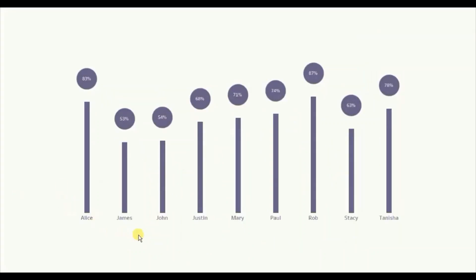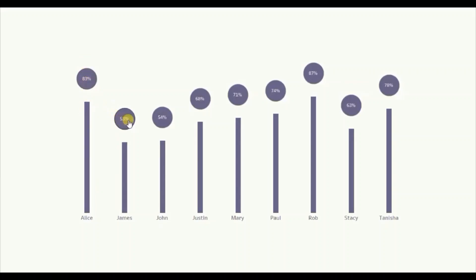Here I have a barchart that shows percentage scored by 10 students of a class. We already know how to create a simple barchart in Tableau, but what is different in this barchart is that instead of showing labels on top of each bar, I have added labels inside these floating circles. If you want something different from a regular barchart, then you can make use of this barchart with floating labels.